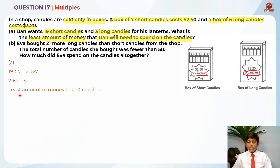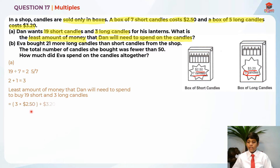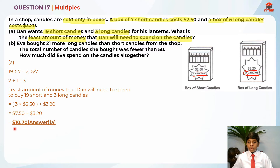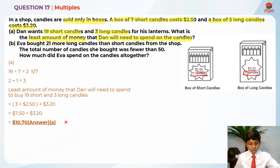So the least amount of money Dan will need to spend to buy 19 short and three long candles is three times $2.50 plus $3.20 for one box. That gives us $7.50 plus $3.20, which equals $10.70. So $10.70 is the answer for Part A.